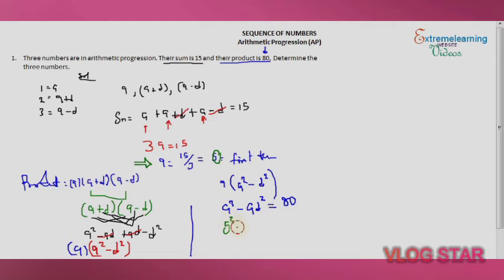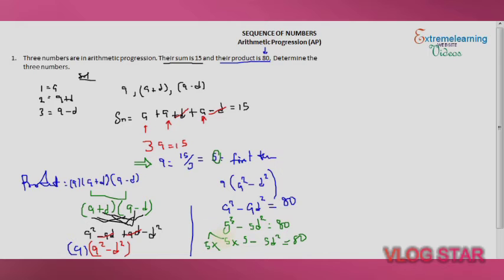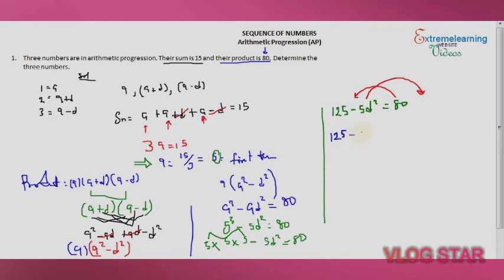Replacing a with 5: 5 cubed minus 5 d squared equals 80. Five cubed is 5 times 5 times 5. Five times 5 is 25, and 25 times 5 is 125. So we have 125 minus 5 d squared equals 80. Collecting like terms, we bring 80 to the left: 125 minus 80 equals 5 d squared.